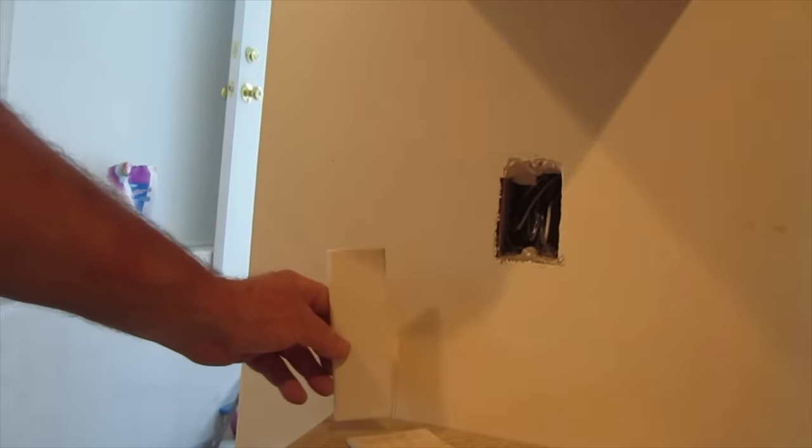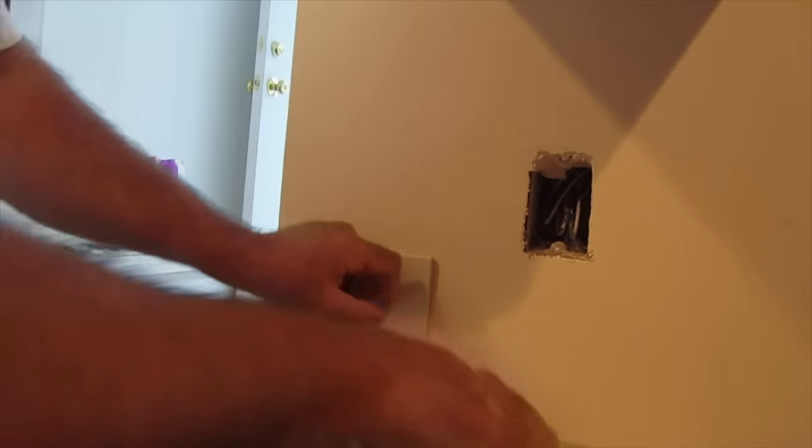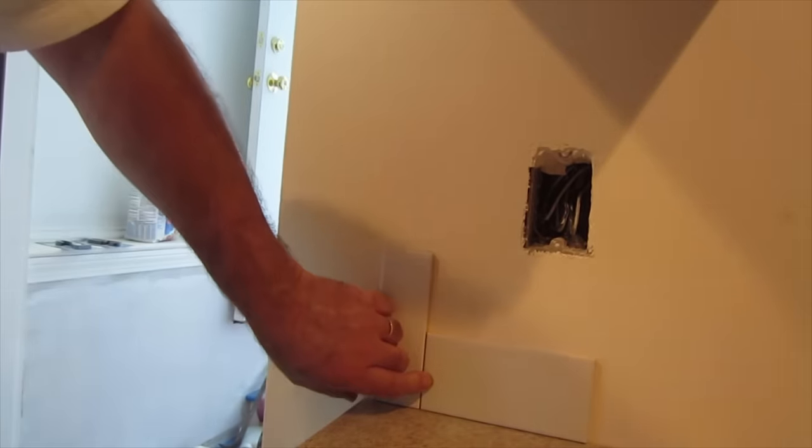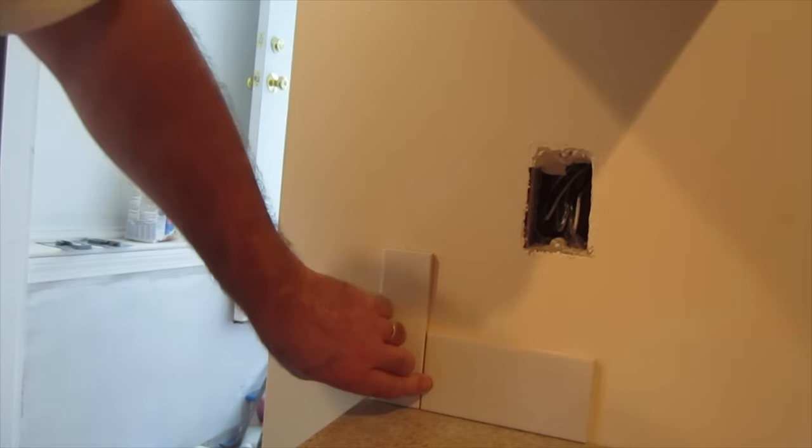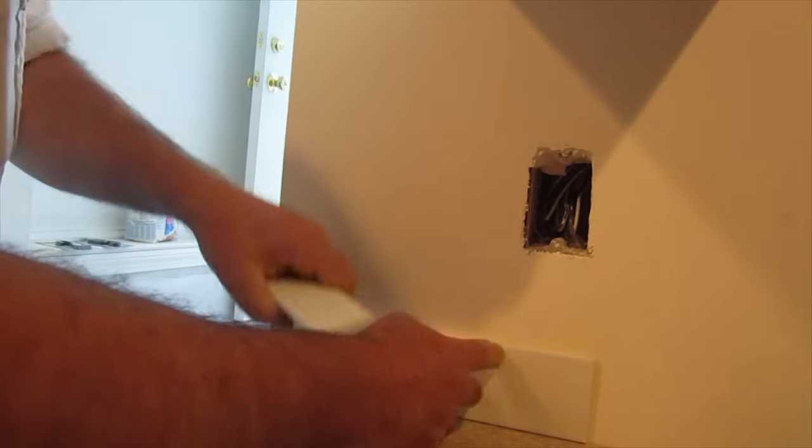So the bullnose is going to go here. And it's like this. And then on a staggered joint. And then the bullnose is going to go right up here. And there's going to be an outside corner right there.